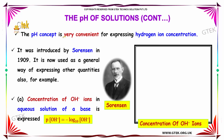The pH concept is very convenient for expressing hydrogen ion concentration. It was introduced by Sorensen in 1909, and is now used as a general way of expressing other quantities also.